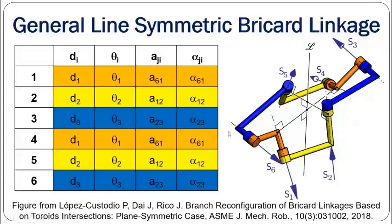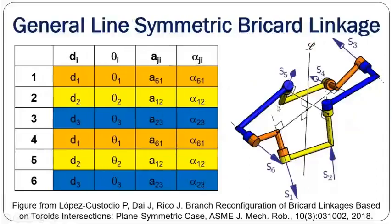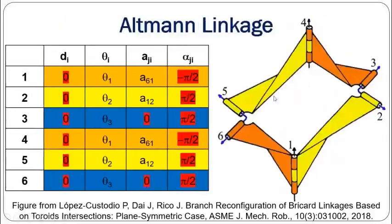Now let's see how we obtain the Altman linkage as a special case of the Brickhardt linkage. The parts shown in red are the special dimensions. Using the same color code — yellow, orange, and blue links — the specialty is especially about the blue links. In the blue links, the link lengths are made zero, all joint offsets are chosen to be zero, and the twist angles are chosen to be either plus or minus 90 degrees. This is how you obtain the Altman linkage as a special case of the general line symmetric Brickhardt linkage.